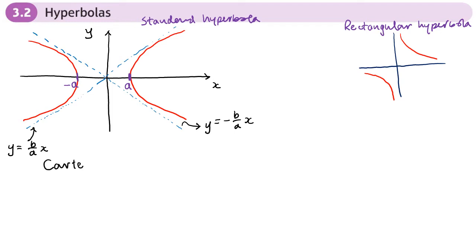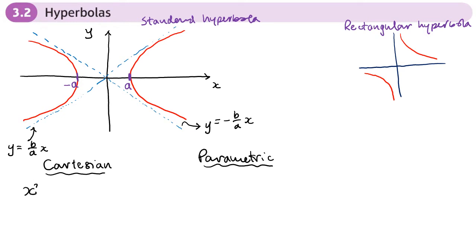We want to look at the Cartesian equation and the parametric equation. The Cartesian equation looks very similar to the ellipse: it is x squared over a squared minus y squared over b squared equals one. With the ellipse it was a plus sign — change the minus to a plus and you get the ellipse.